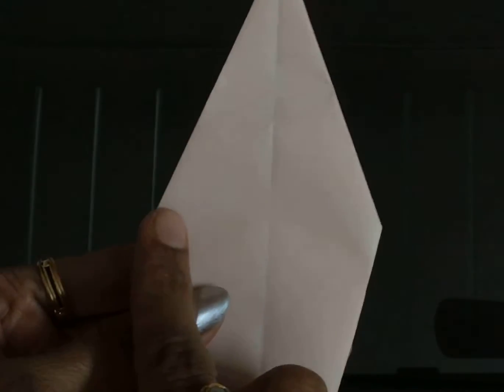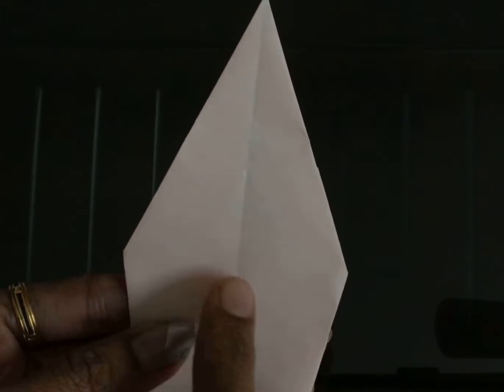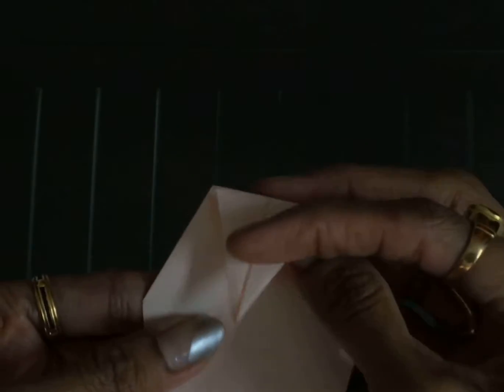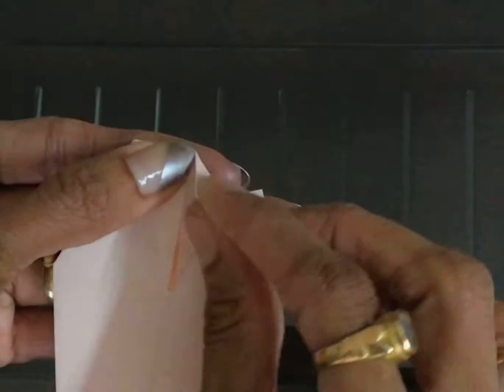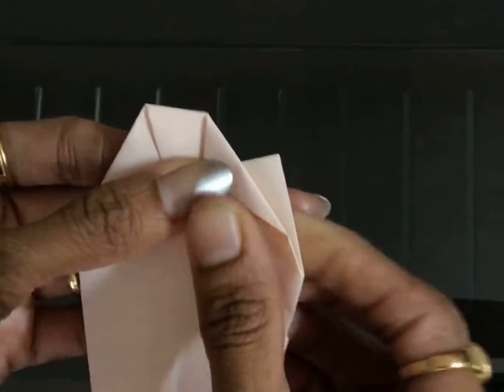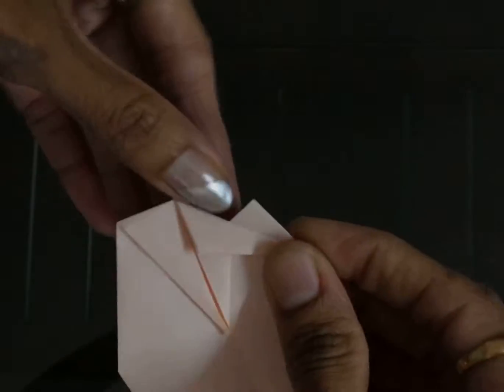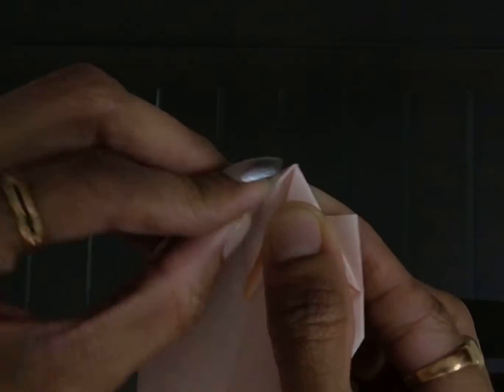Now turn the model and make an imaginary line between these two points and you can find the center point here. Fold down the tip to that exact point and make a crease. Now bring these two sides to the center crease as shown.